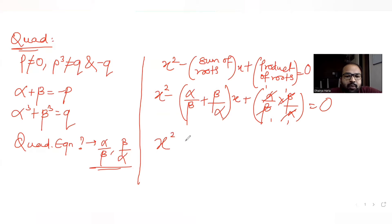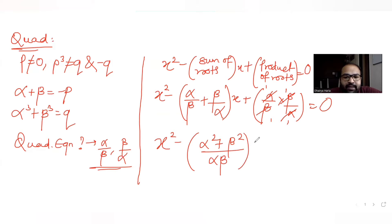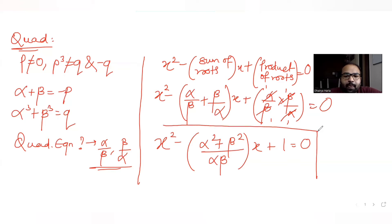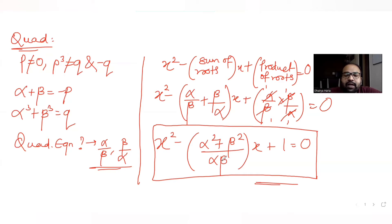Solving further, this gives x² minus (alpha² + beta²)/(alpha·beta) times x plus 1 equals zero. This is the required form of the quadratic equation. Now we need to find alpha·beta and alpha² + beta² to complete it.